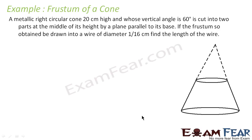Let's take the last question on the frustum. A metallic right circular cone 20 centimeters high with a vertical angle of 60 degrees is cut into two parts at the middle by a plane parallel to the base. The frustum obtained is drawn into a wire of diameter 1/16 centimeter. Find the length of the wire.